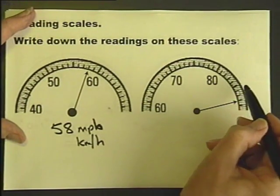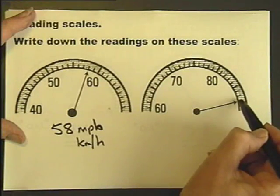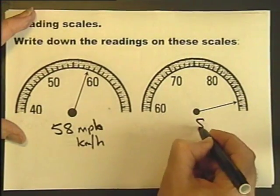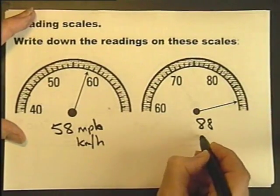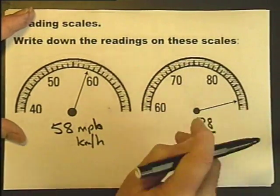So this is 81, 82, 83, 84, 85, 86, 87, 88. 88 miles per hour or kilometers per hour. When you see a scale, the first thing you've got to do is figure out what it's going up in.